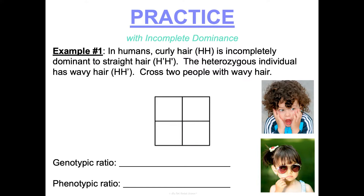Here's a practice example. In humans, curly hair (HH) is incompletely dominant to straight hair (H'H'). Notice the notation is different — we don't use big and little letters for dominant and recessive because there's no true dominance. Instead we use all capital letters with primes to note the difference in alleles. Heterozygous would be HH', and the intermediate of curly and straight is wavy. For this Punnett square, cross two people with wavy hair (HH') and write out your genotypic and phenotypic ratios.